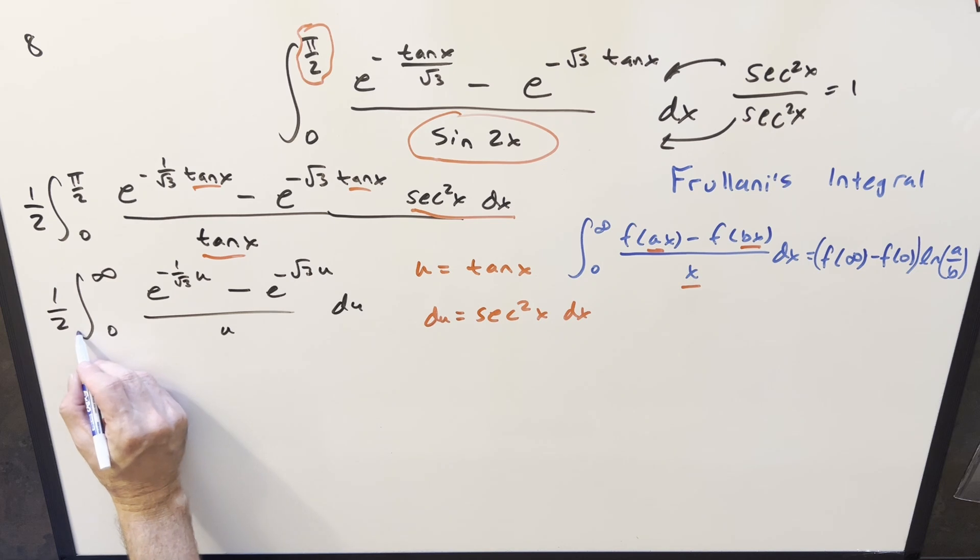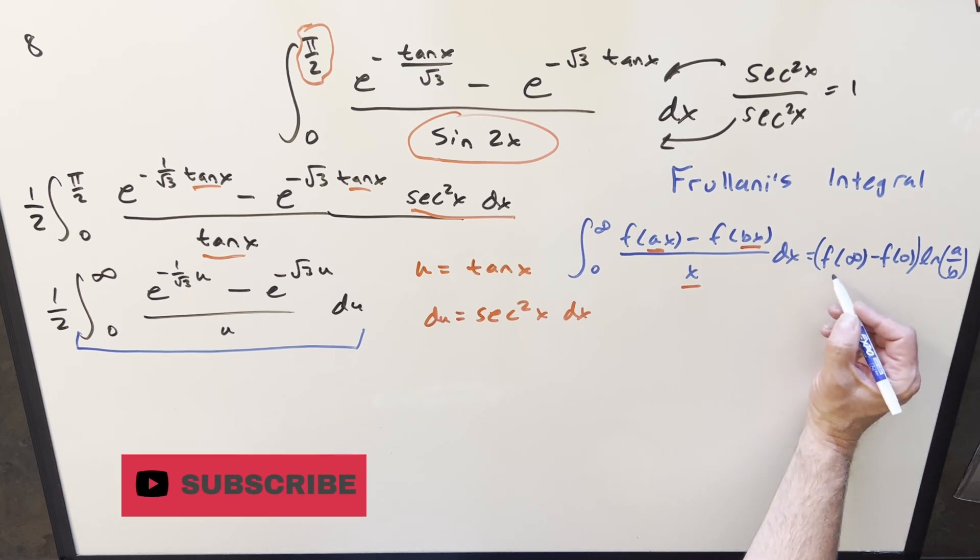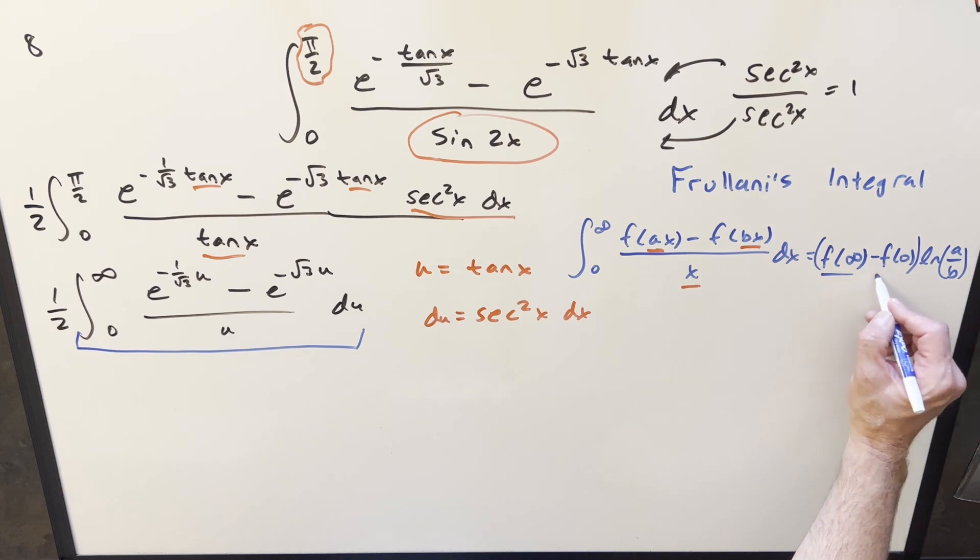But then what do we notice right here? This thing, this whole integral, now we're exactly set up for our Frullani's integral. We can use this formula. We just need to check some different things. Because we're going to need f of infinity needs to exist. This limit needs to exist. And we also need to be able to get a value for f of 0.